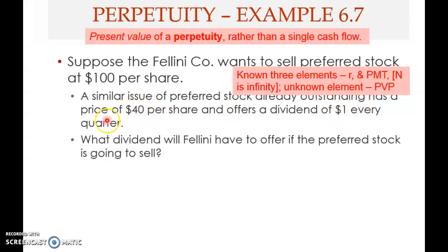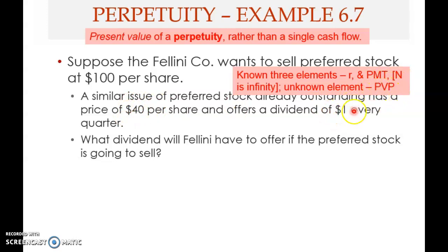The second known element is the dividend paid every quarter — quarter means three months, so four times a year. If you own one share, you are paid a dividend of one dollar every quarter, and you paid forty dollars for that share. The known elements are: present value and the dividend payment. What is unknown is the discount rate or interest rate. N is infinity, so that is given.